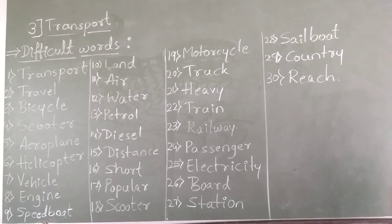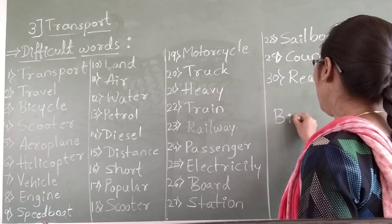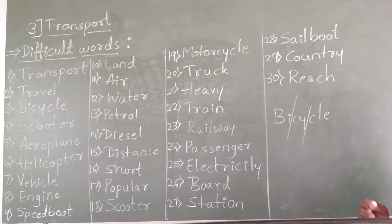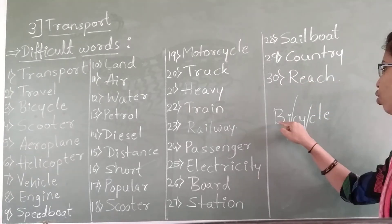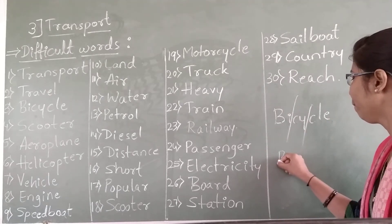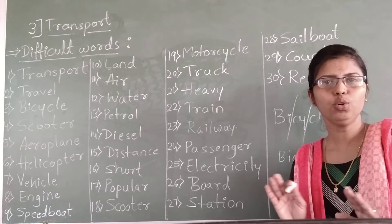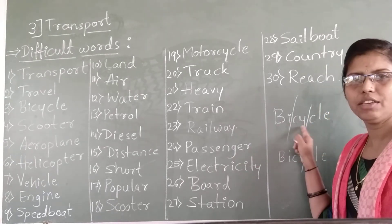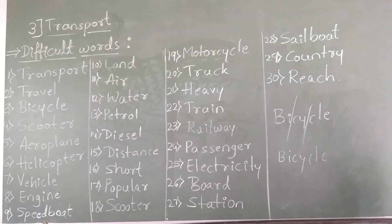Dear students, listen here. While reading the letters of the word — for example, take bicycle: B-I-C-Y-C-L-E, bicycle. Divide the letters and read. It is very easy to remember what you are reading and it is very easy to learn. So B-I-C-Y-C-L-E — bicycle. You should write like this.